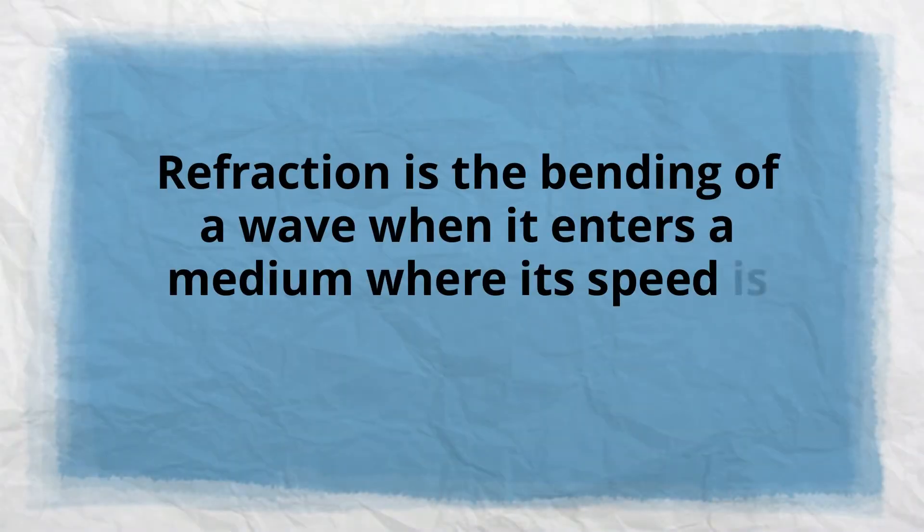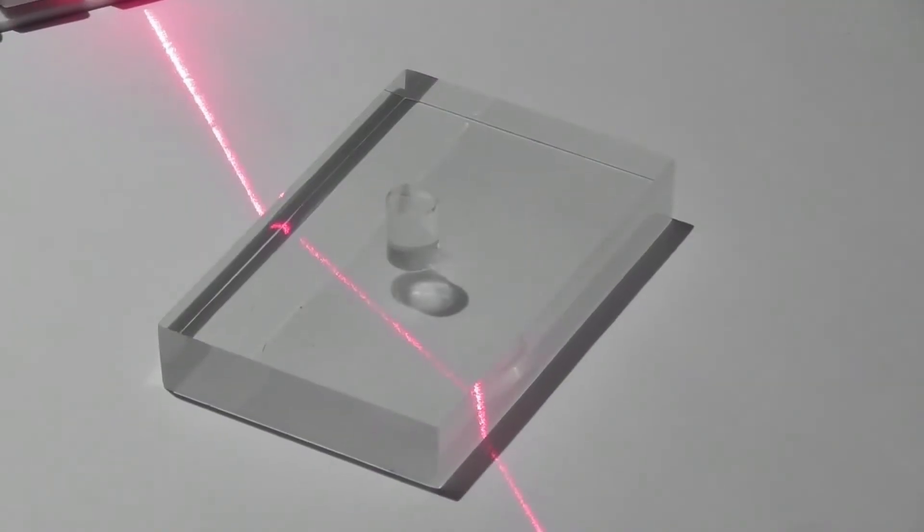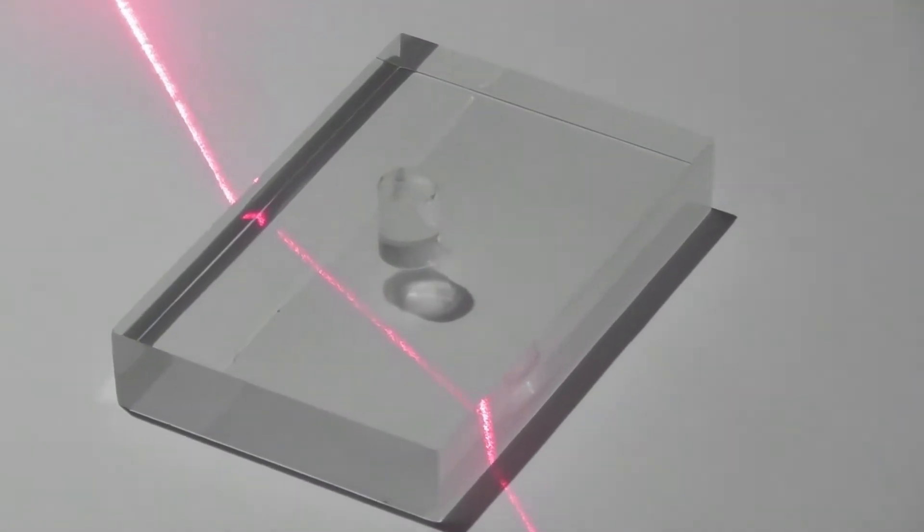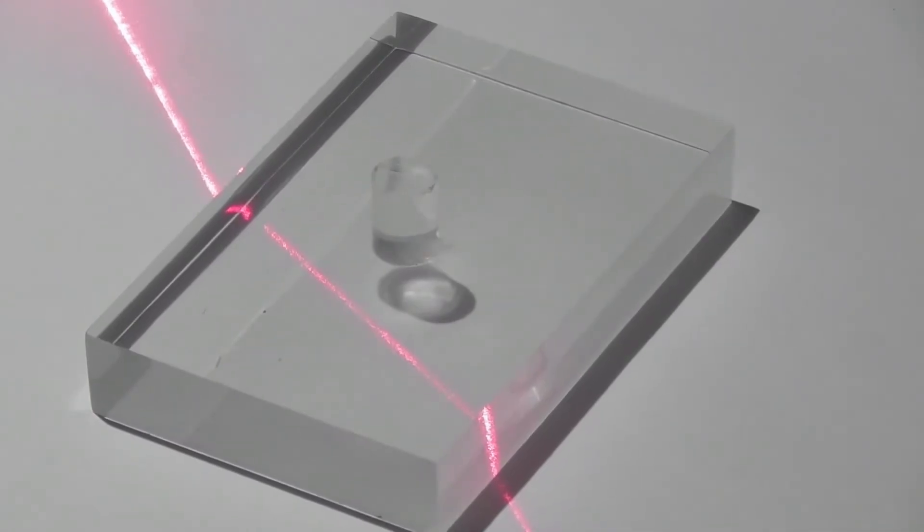Refraction is the bending of a wave when it enters a medium where its speed is different. For example, when this light enters this solid, you can see how it slows down and bends.